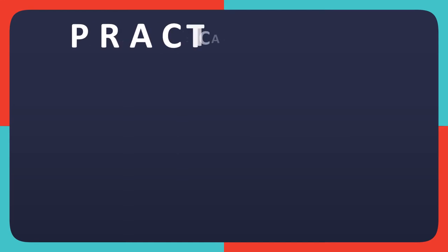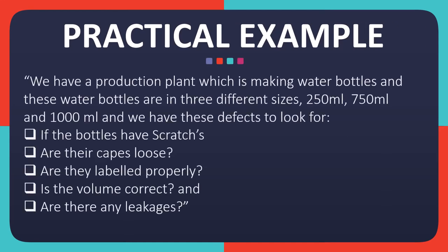Now let's see a practical example. Suppose we have a production plant making water bottles in three different sizes: 250ml, 750ml, and 1000ml. We have these defects to look for: if the bottle has any scratches, if the caps are loose, if they are labeled properly, if the volume is correct, and if there are any leakages.